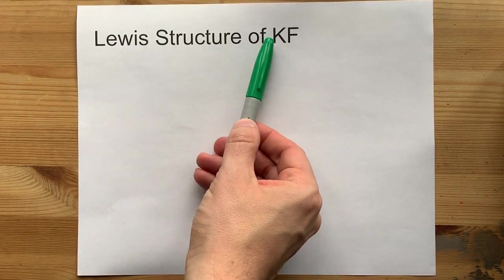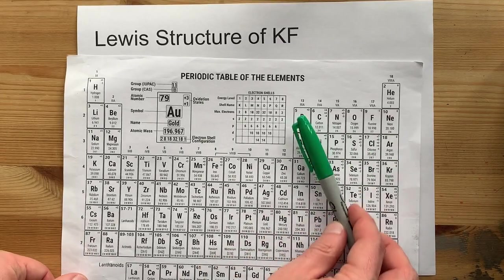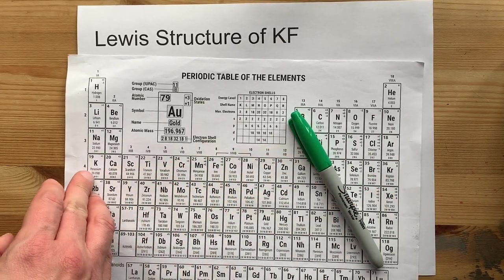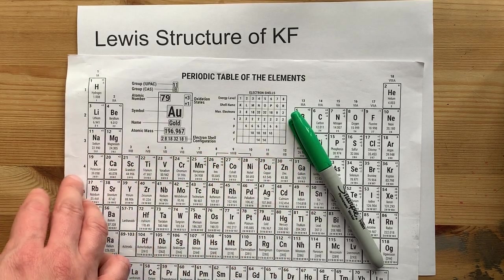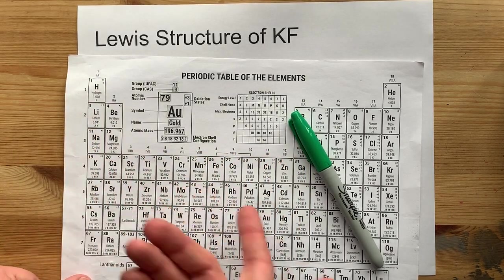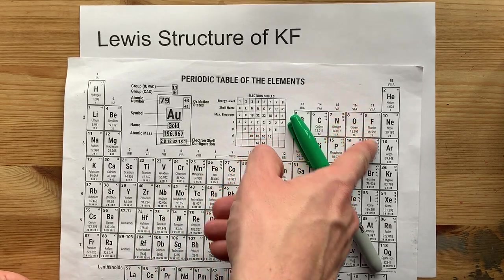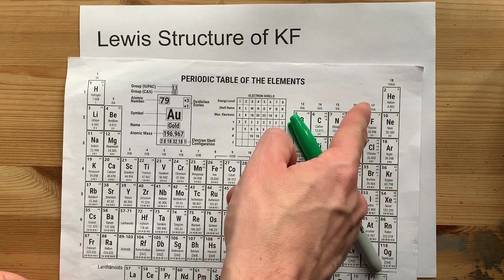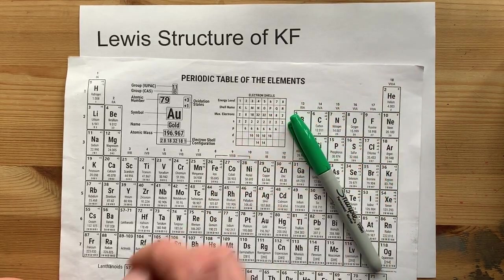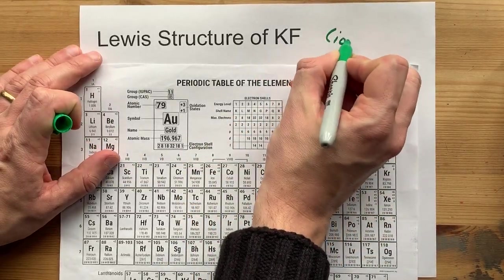The Lewis structure of potassium fluoride, KF, is not too bad once you realize that potassium is a metal. It comes from the left-hand side of the periodic table — it's in the group called alkali metals, after all. And fluorine comes from the right-hand side of the staircase; this is the halogen group, and everything right of the staircase is a non-metal.